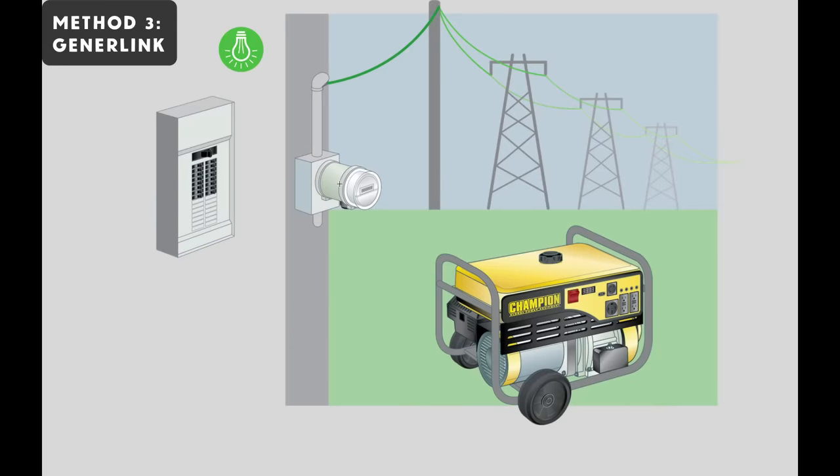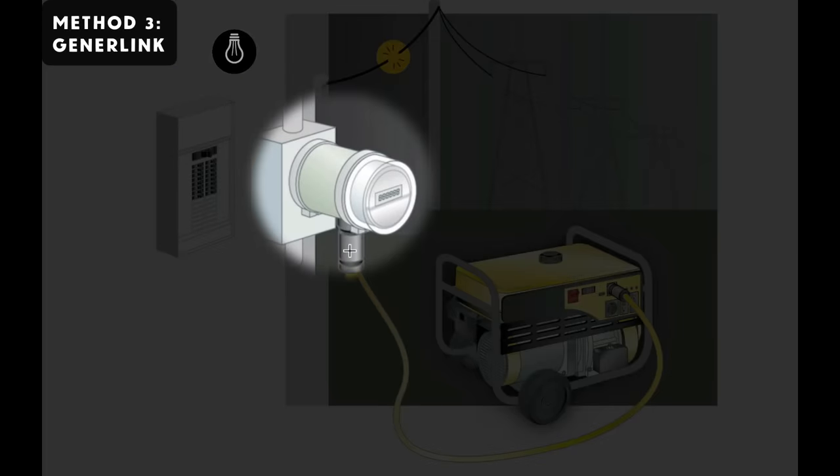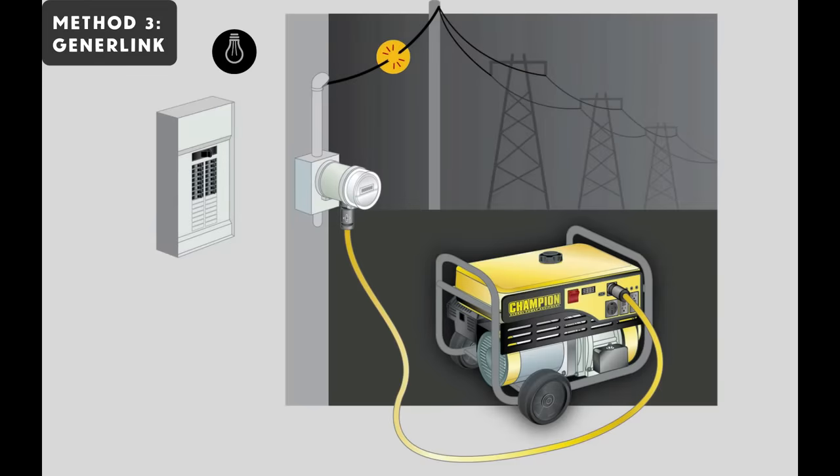When the power goes out, you've got to do two things if you have a GenerLink system. The first thing is to connect the generator to the GenerLink with a cable. Now, this cable is quite a bit like the one that was used with the transfer switch system, except in this case, this end of the cable is proprietary. It's specially made to connect with the GenerLink. The company provides these cables. They're available for connecting to all different kinds of generators, and they come in different lengths. Now, when that cable connection is made, and the grid power is off, and you fire up the engine of your generator, you're going to get full generator power delivered to your home.